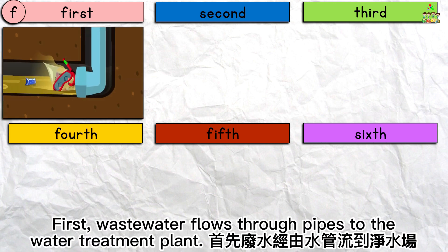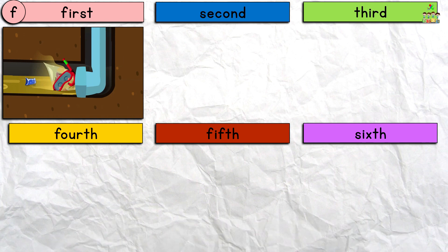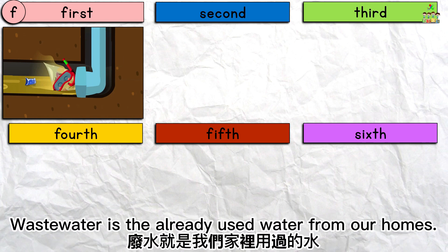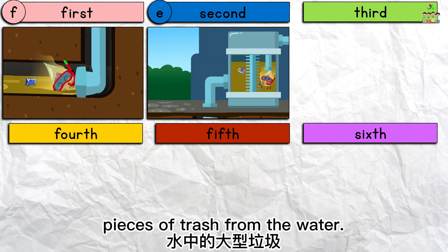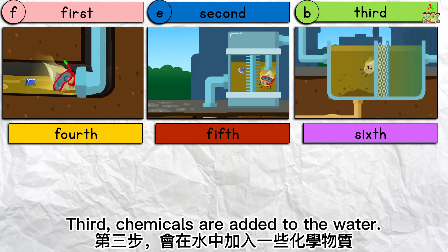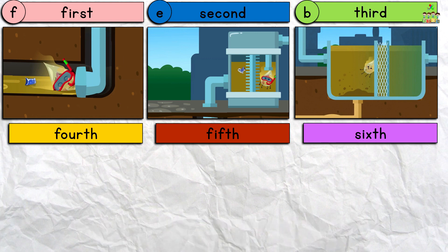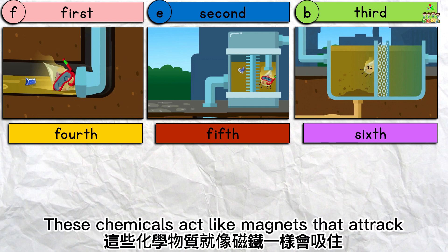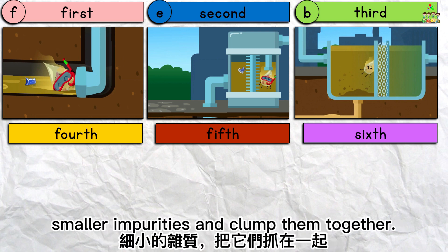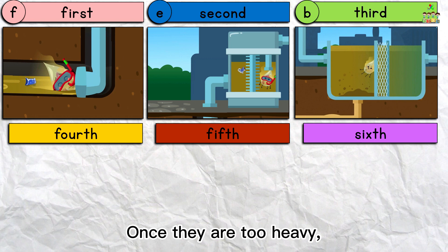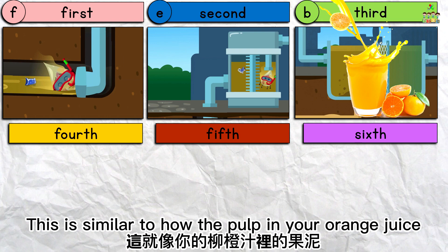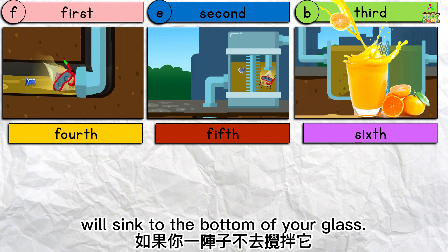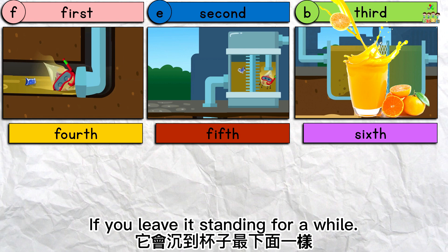First, wastewater flows through pipes to the water treatment plant. Wastewater is the already used water from our homes. Second, a screen is used to separate large pieces of trash from the water. Third, chemicals are added to the water. These chemicals act like magnets that attract smaller impurities and clump them together. Once they are too heavy, they sink to the bottom of the tank. This is similar to how the pulp in your orange juice will sink to the bottom of your glass if you leave it standing for a while.